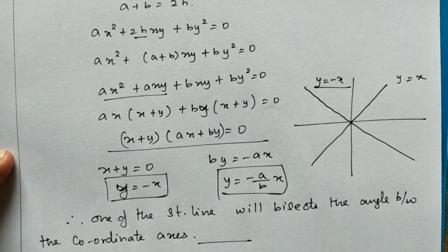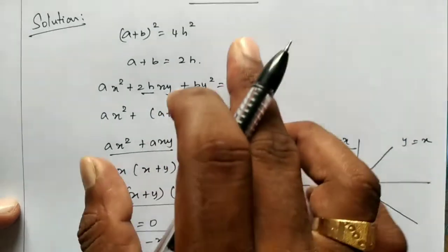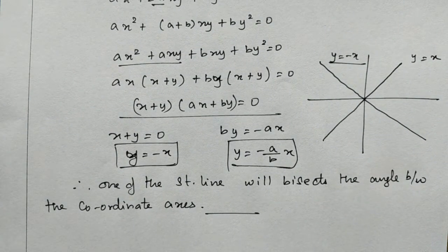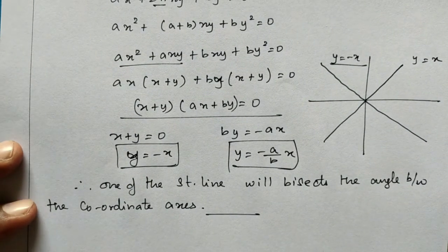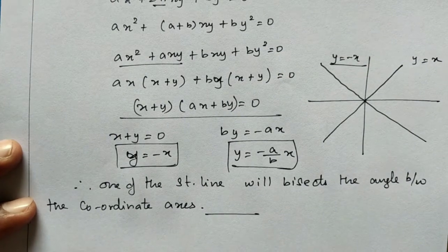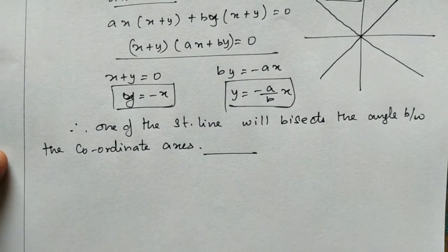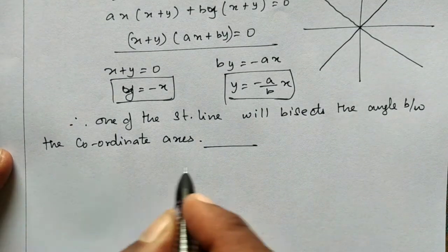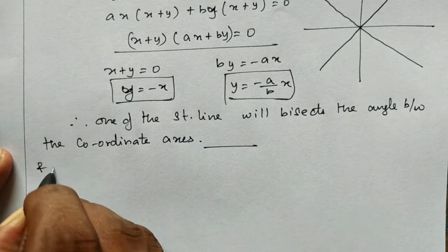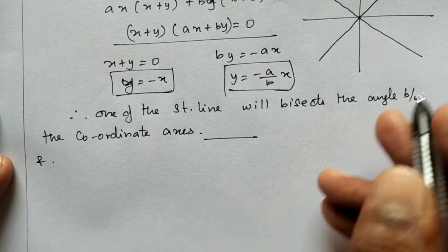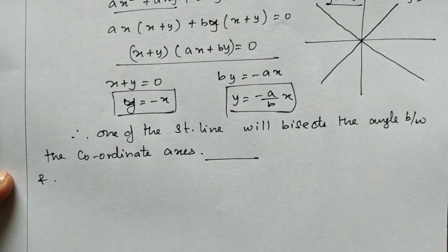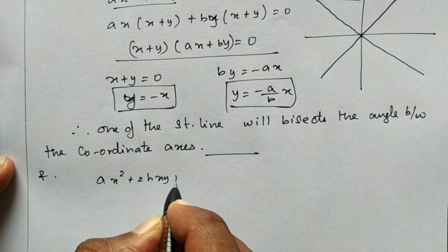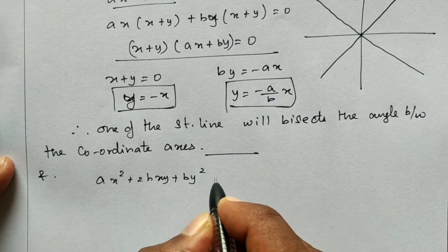This is our result: A + B whole square is equal to 4H². Proof 1 — if one of the straight lines bisects the coordinate axis, we need to use either 45° or 135°. Now we need to use AX² + 2HXY + BY² = 0.